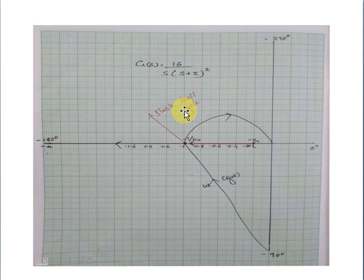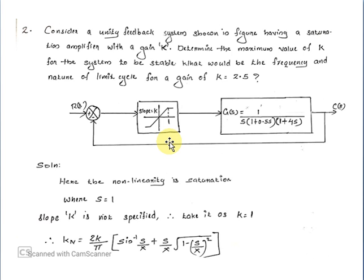Next question: Consider a unity feedback system with a saturation amplifier with gain K. We need to determine the maximum value of K for the system to be stable, and find the frequency and amplitude of the limit cycle for K equal to 2.5.